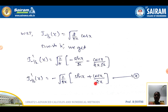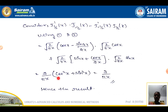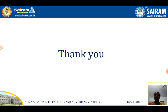Now consider J₁/₂'(x)·J₋₁/₂(x) − J₋₁/₂'(x)·J₁/₂(x). Using results 1 and 2 and simplifying, we get (2/πx)·(cos²x + sin²x). Since cos²x + sin²x = 1, we get 2/πx. This is the required result. Thank you.